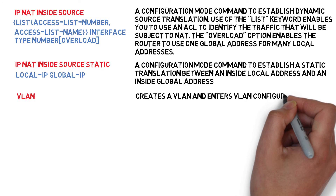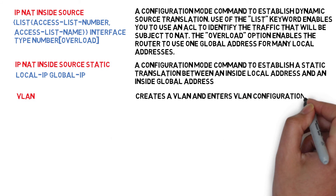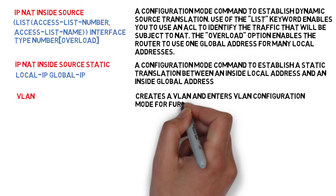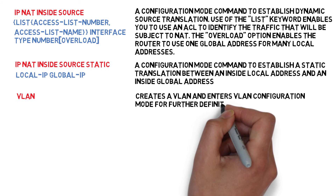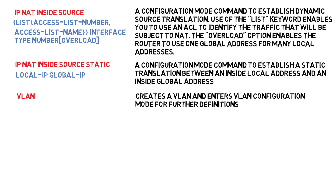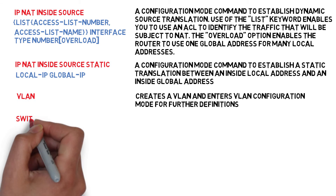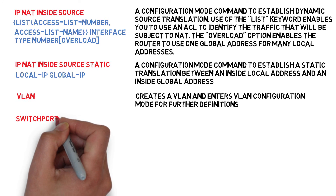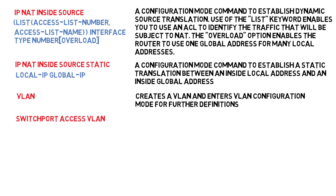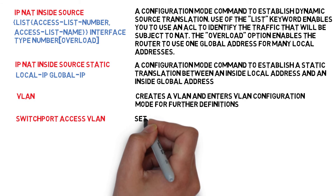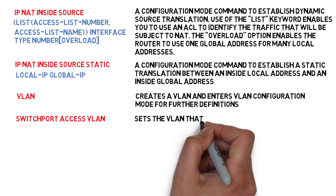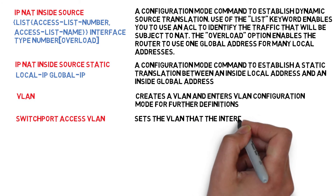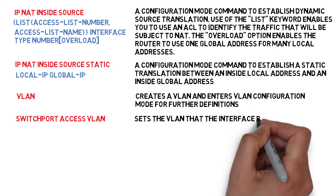VLAN — creates a VLAN and enters VLAN configuration mode for further definitions. Switchport access VLAN — sets the VLAN that the interface belongs to.